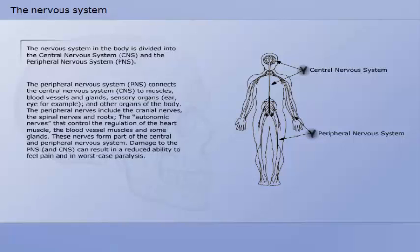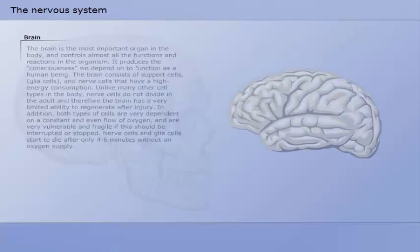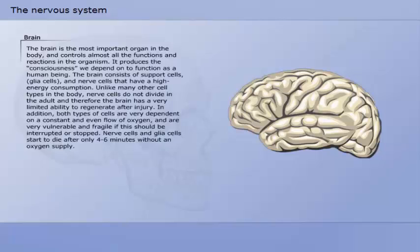The peripheral nervous system connects the central nervous system to muscles, blood vessels and glands, sensory organs, and other organs of the body. The peripheral nerves include the cranial nerves, the spinal nerves and roots, and the autonomic nerves that control the regulation of the heart muscle, the blood vessel muscles, and some glands. These nerves form part of the central and peripheral nervous system. Damage to the peripheral nervous system can result in a reduced ability to feel pain and in worst case paralysis.